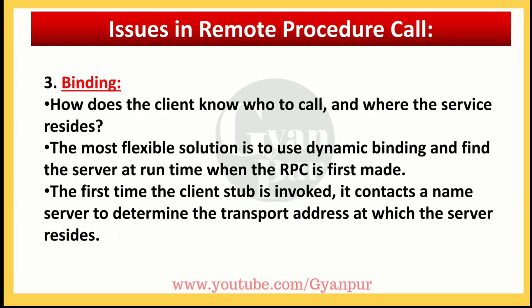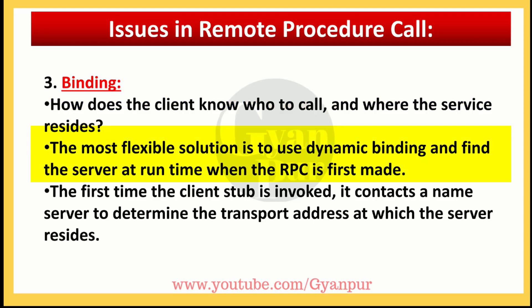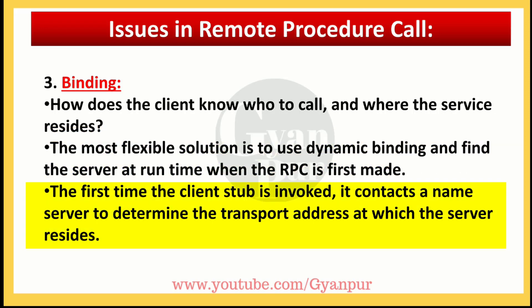The third and final issue is binding. How does the client know who to call and where the service resides? The most flexible solution is to use dynamic binding, that is runtime binding, and finding the server at runtime when the RPC is first made. The first time the client stub is invoked, it contacts a name server to determine the transport address at which the server resides.